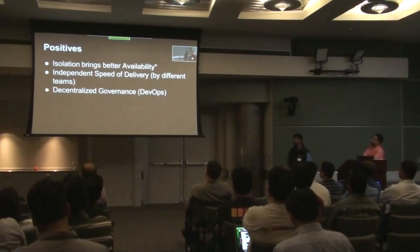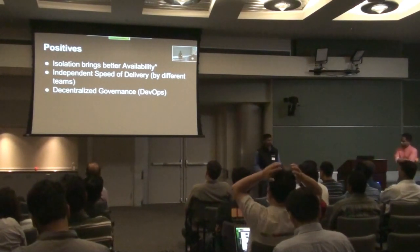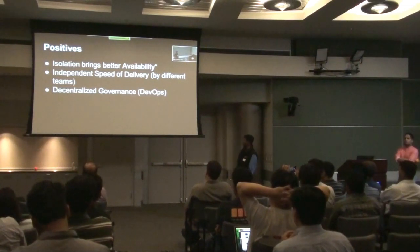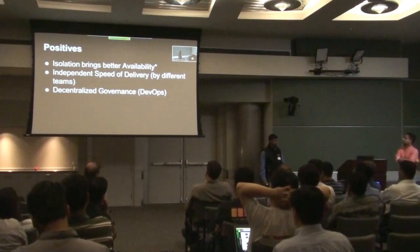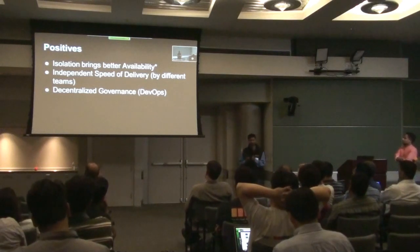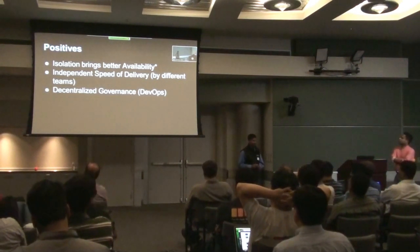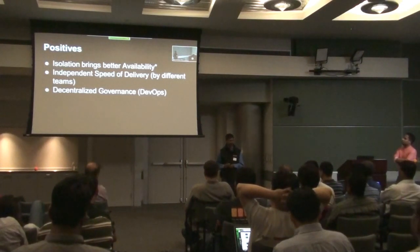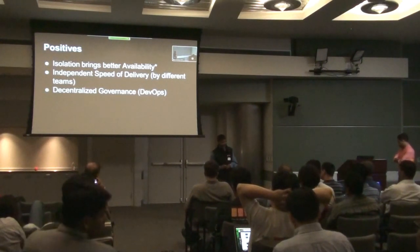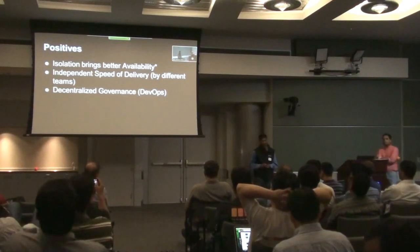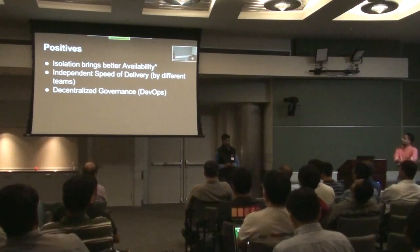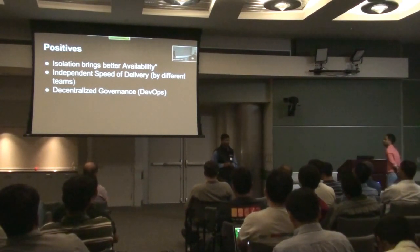What we're talking about today is that there are some good positives of moving to microservices. One of the most important positives everyone talks about is velocity of development — once you divide your application into multiple microservices, the velocity increases. It also brings a federation of DevOps. We don't need a centralized team managing a monolithic web application. Instead, you change your culture so that every team that owns a microservice is their own product manager, their own engineer, their own QA, and their own sysops. That's a federated model — decentralized governance — which is fantastic, but brings challenges as well.